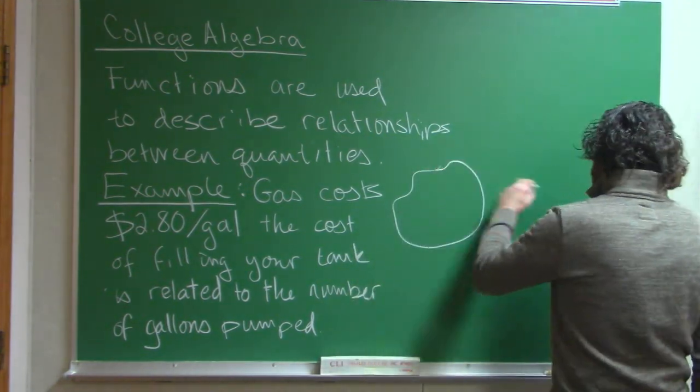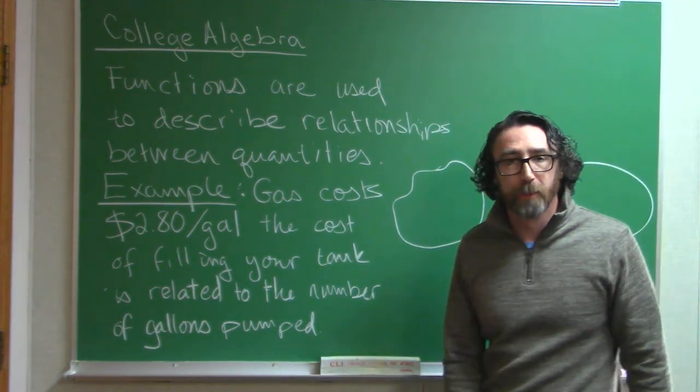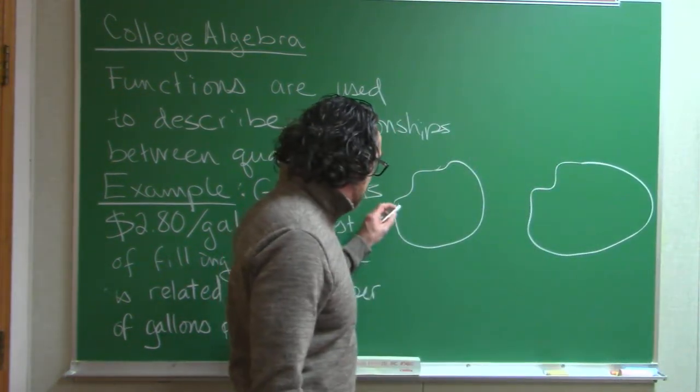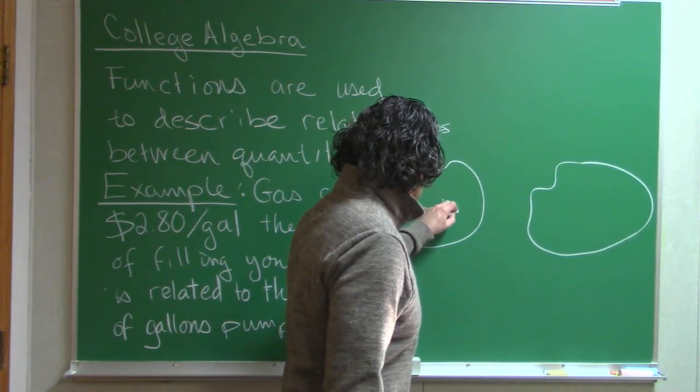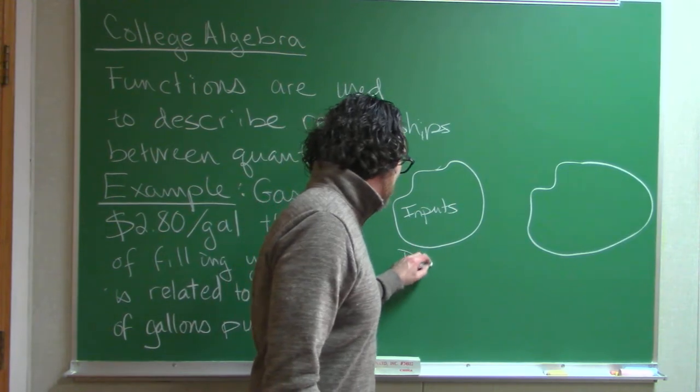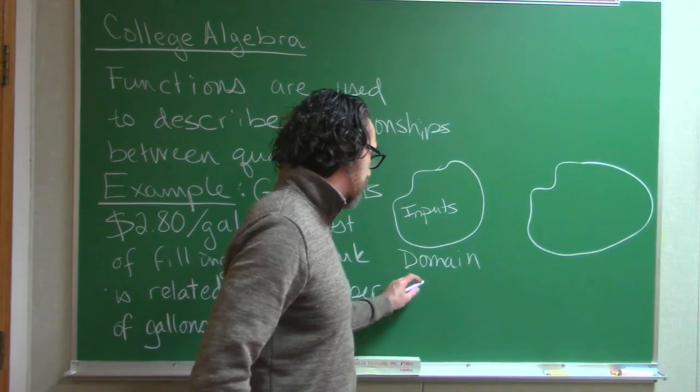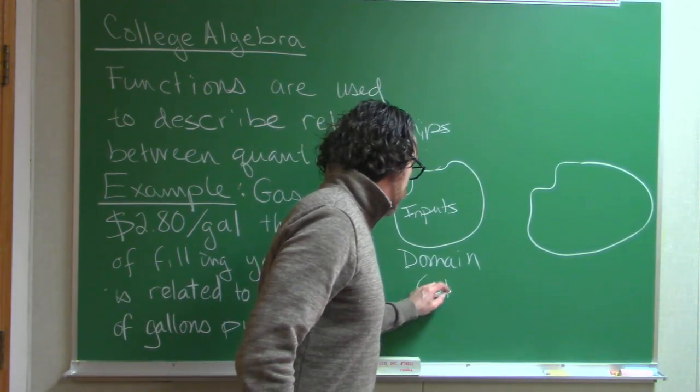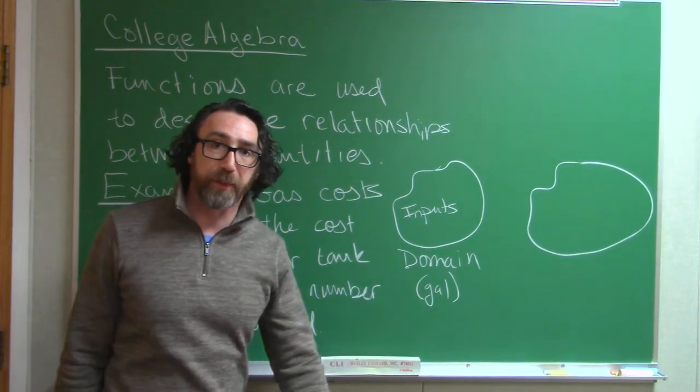Now, there are really three parts to a function. What you need here is a set of input values. The fancy name for this set is the domain of the function. In this example, the domain would be how many gallons you pump into the tank.